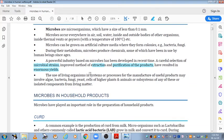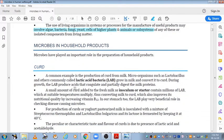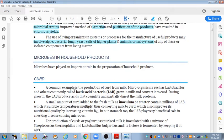The use of living organisms in systems and processes for the manufacture of useful products may involve algae, bacteria, fungi, yeast, cells of higher plants, animals, and their systems as isolated components which we can use. However, if we talk about 12th grade, then you will have the most mention of bacteria and fungi. Let's start with the benefits of microbes in human welfare. We will see one by one, where we will get benefit from them.